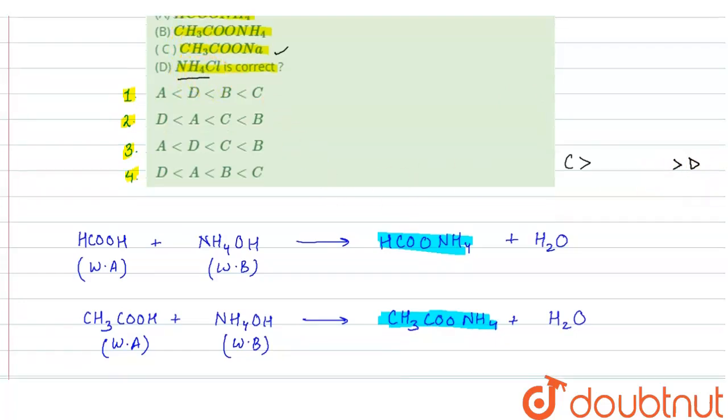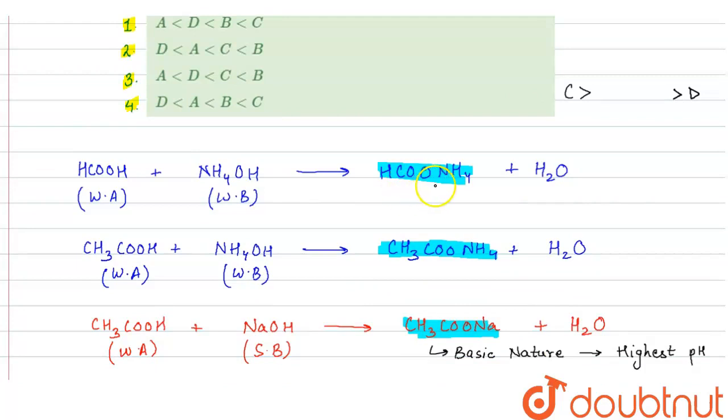Now we are left with HCOONH4 and CH3COONH4. These two are the salt of weak acid and weak base. Now how we will decide the nature of these? As you can see here base is same NH4OH, so we will compare the acid here.